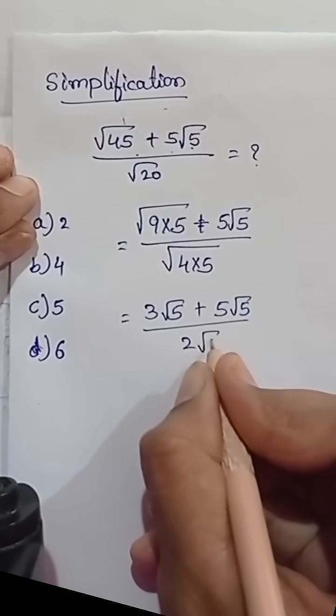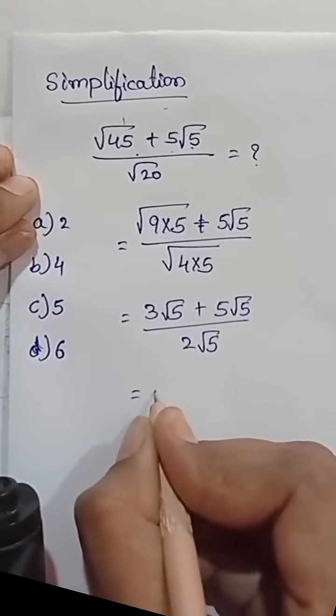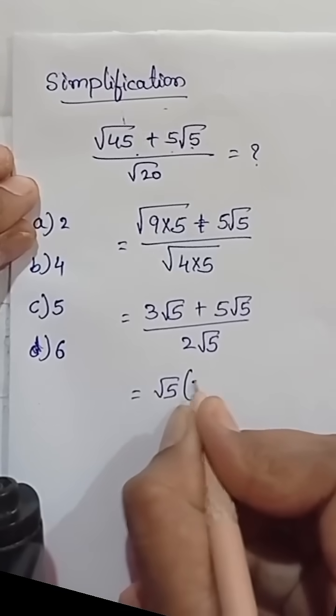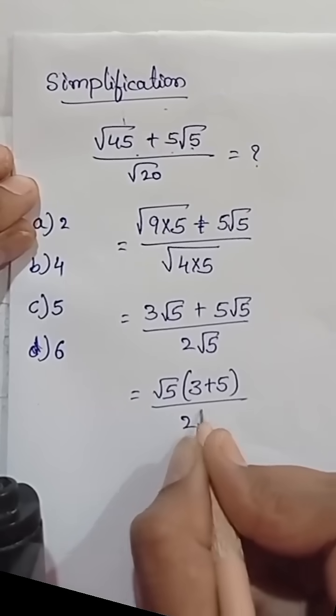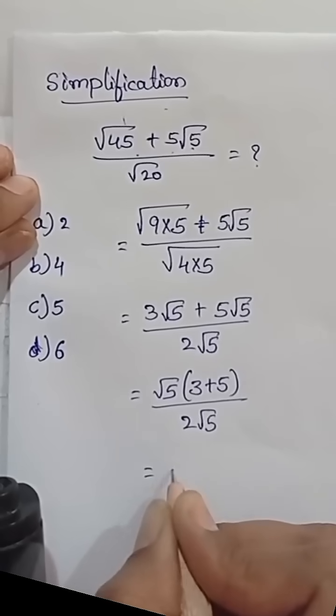So we can take square root of 5 as common in the numerator, that is 3 plus 5 within the parenthesis, and in the denominator 2 square root of 5.